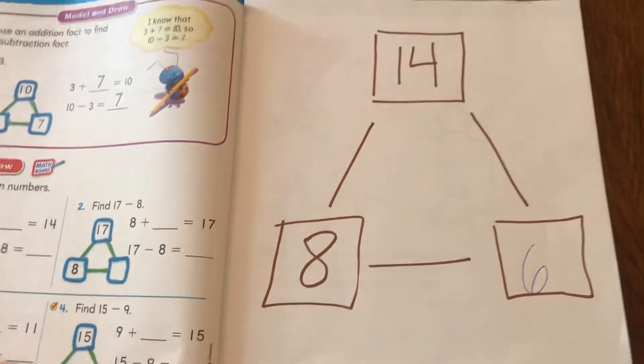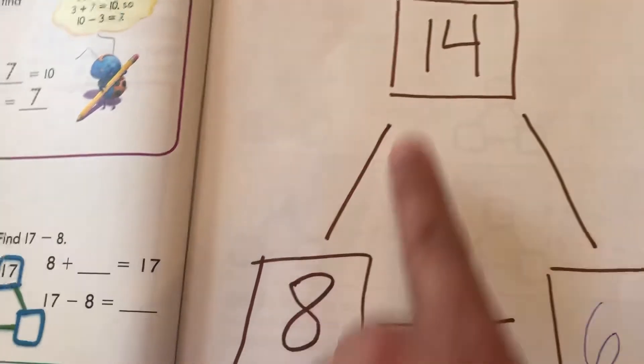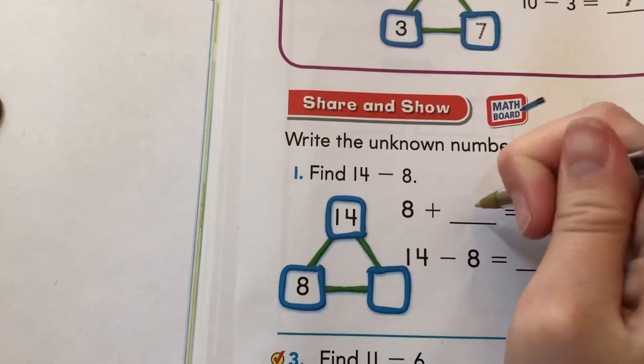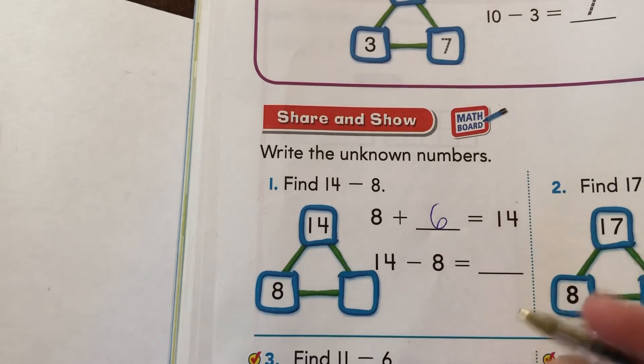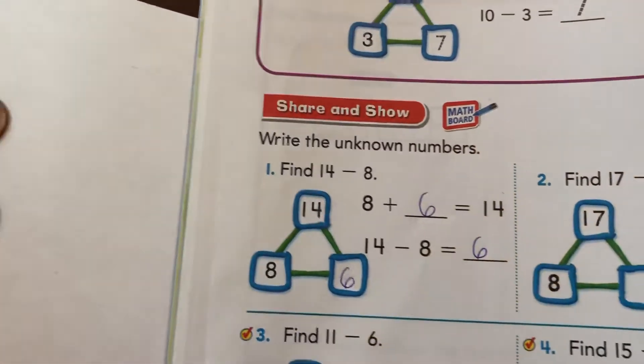So then. Oh, that's how the triangle works. This is the whole, which is the large amount. Yep. And this is one part, which is 8. And this is the other part, which is 6. Yeah. So 8 plus 6 equals 14. And 14 minus 8 equals 6. So then we would put our 6 in that box right there.